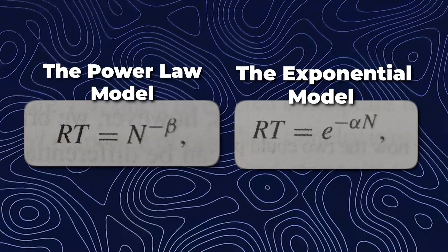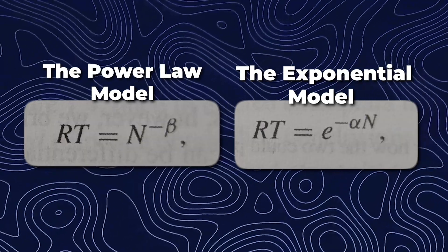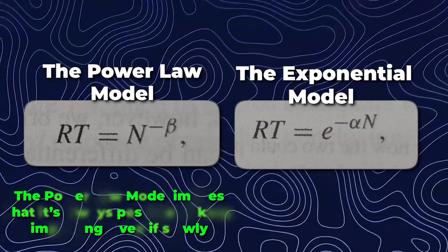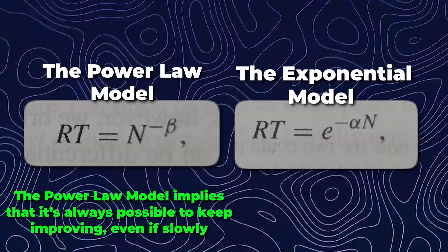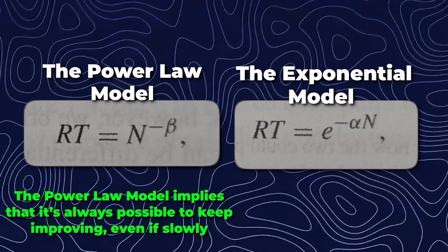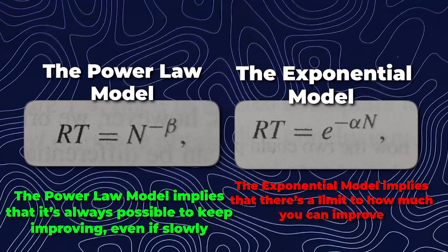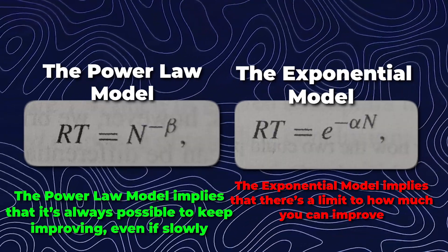Here's the issue: each of these models leads us to different conclusions about reality, and those conclusions matter a lot. If we look at the structure of each equation, the power law model implies that it's always possible to keep improving, even if slowly. Whereas the exponential model implies that there's a limit to how much you can improve. And those are very, very different conclusions.